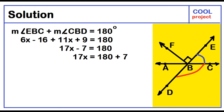The resulting equation is 17x minus 7 equals 180. Add 7 to both sides of the equation. 17x equals 180 plus 7. 17x equals 187. Dividing both sides by 17, x equals 11.